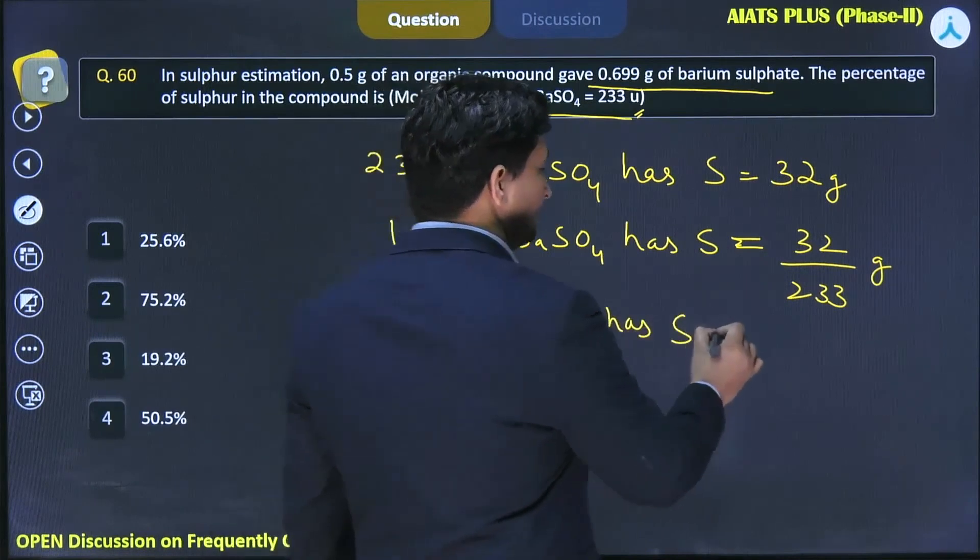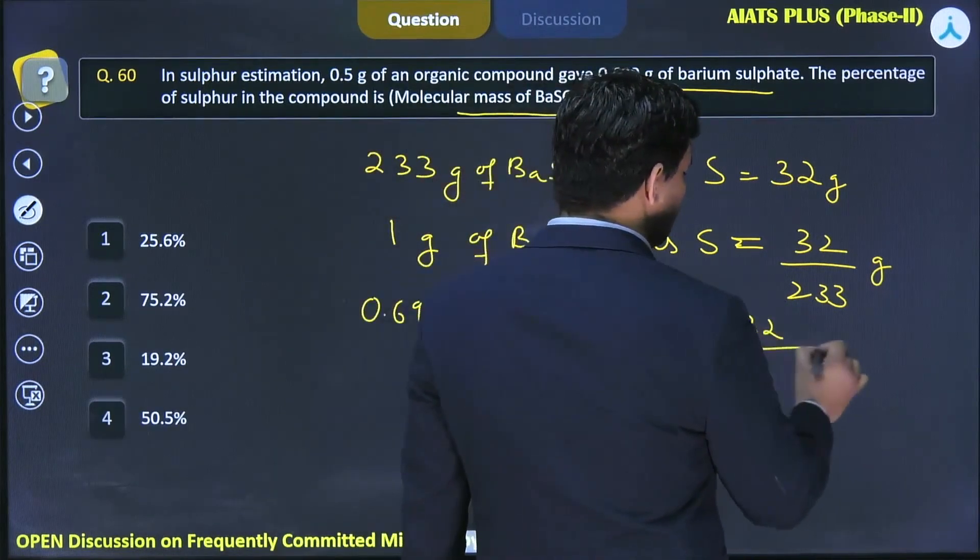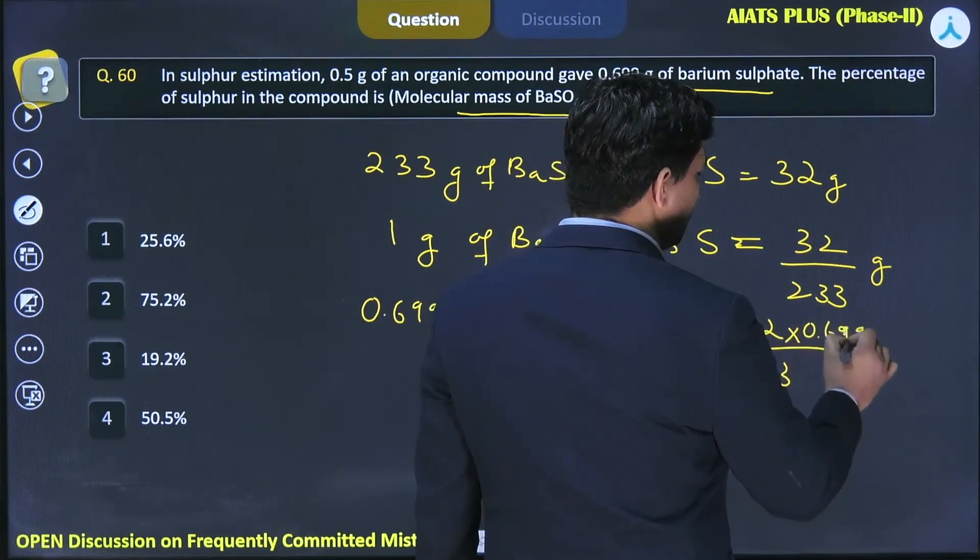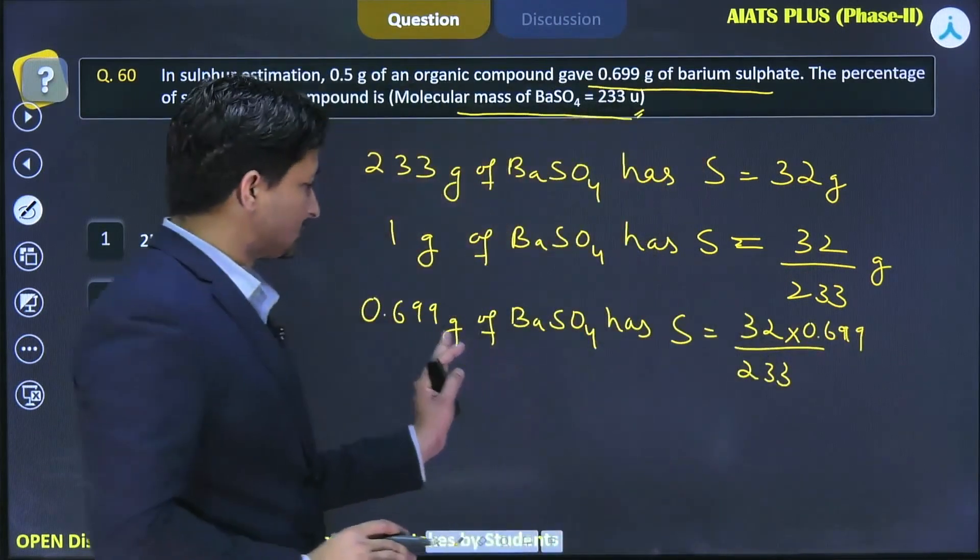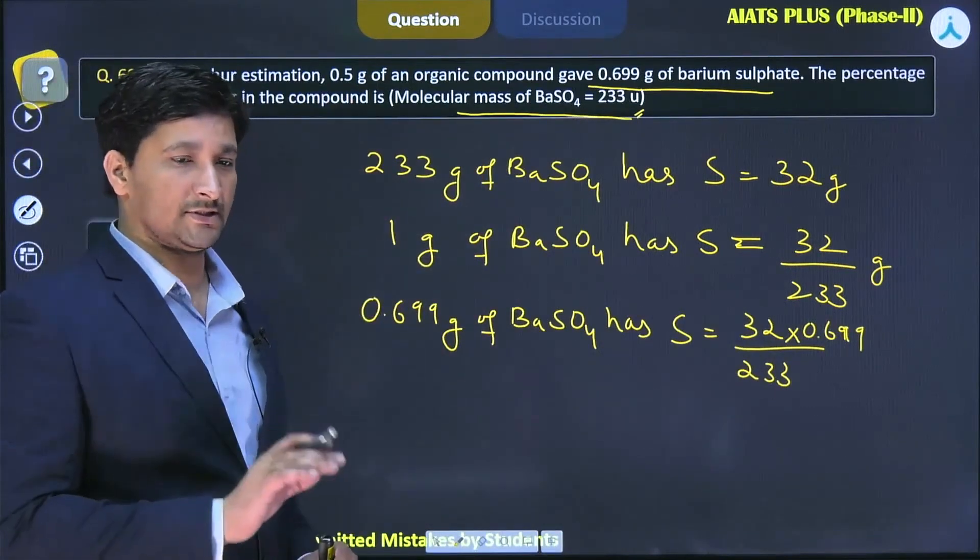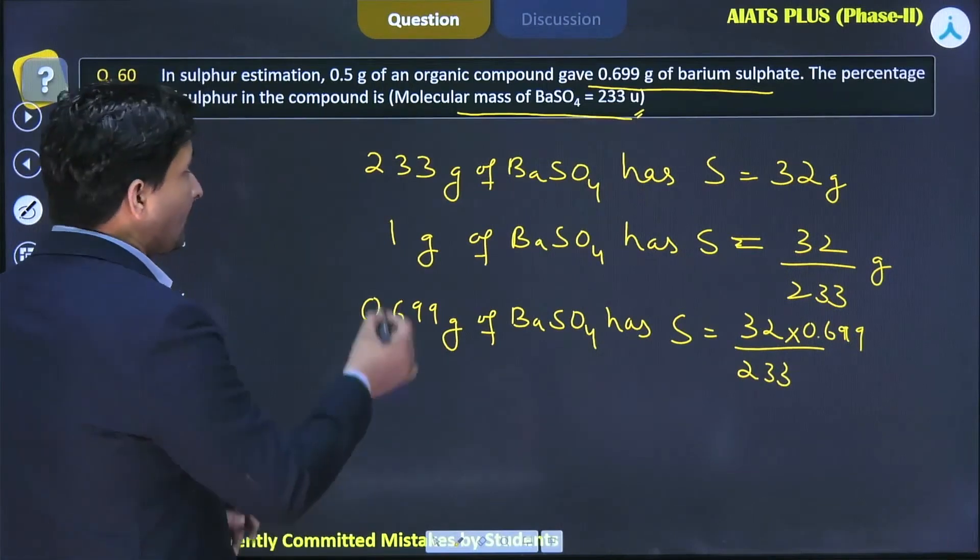So 0.699 grams of barium sulfate has sulfur equal to 32 by 233 times 0.699. This is the actual amount of sulfur that was present in the 0.5 gram of the organic compound.